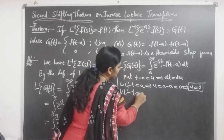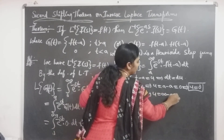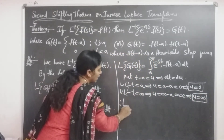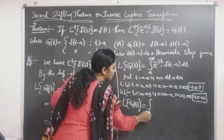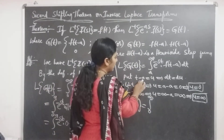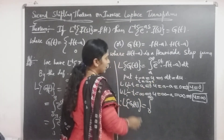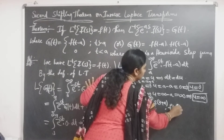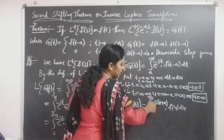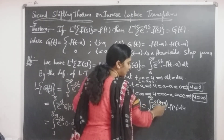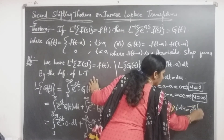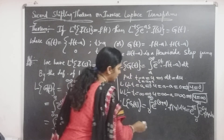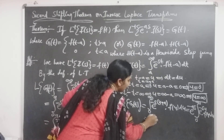The upper limit: when t is infinity, u equals infinity minus a, which is infinity. So the upper limit of u is also infinity. Therefore L of g of t equals the integral from 0 to infinity. We write t equal to u plus a and substitute: e to the power minus s times (u plus a) times f of u du. Taking e to the power minus a·s as a constant outside, we get e to the power minus a·s times the integral from 0 to infinity of e to the power minus s·u times f of u du.